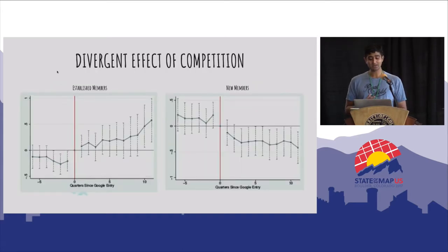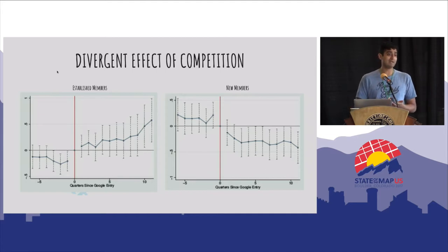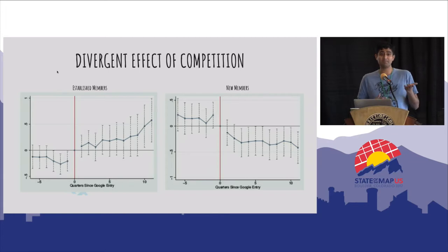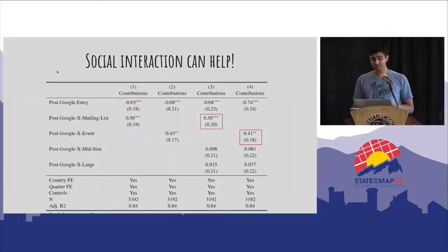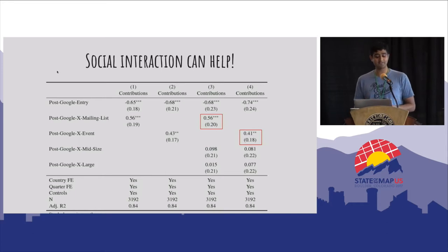I went through that exercise and found a diversion effect. Amongst established contributors, competition actually increases contributions — they start protecting OpenStreetMap more and making more edits. But newcomers stop coming to OpenStreetMap at the same rate as before. So competition is shaping OSM communities in important ways. Perhaps most interestingly, I looked at this effect in places with a strong social structure — places with mailing lists and physical events versus places without. And what I saw is that this negative effect on newcomers completely goes away. These social structures are important not only because they build community, but they also might help newcomers understand the value of open data versus commercial data.